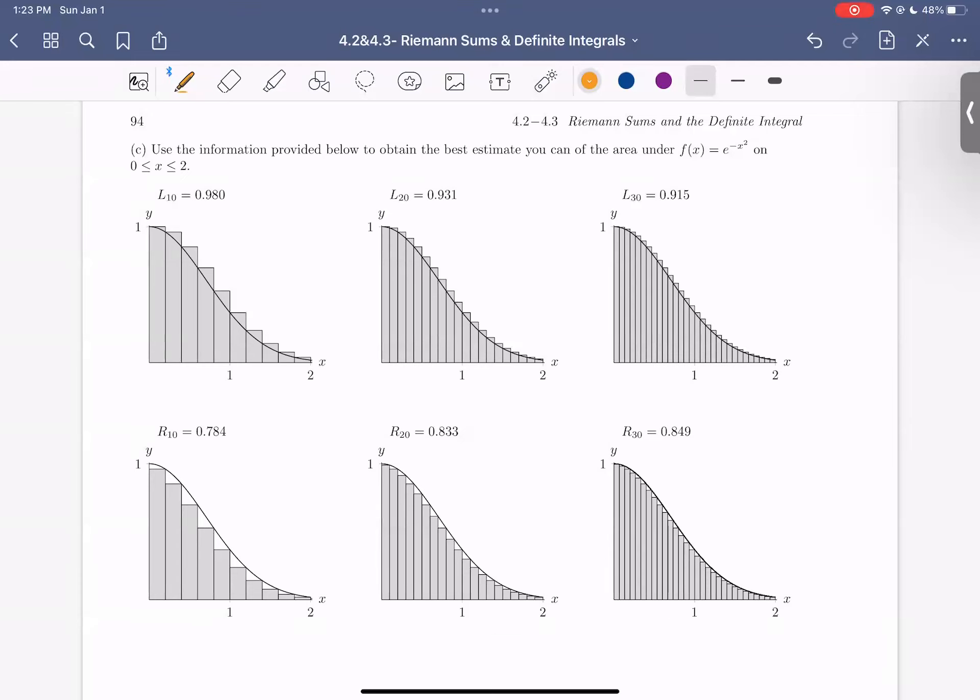So let's just notice or observe some things. These first three graphs are all a left sum using left endpoints of the rectangles. These three examples are using right sum rectangles. The height of the rectangle is computed by the endpoint on the right.